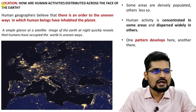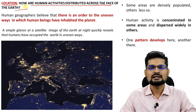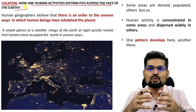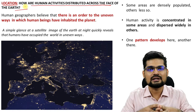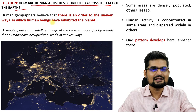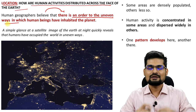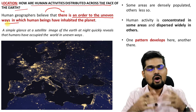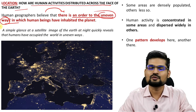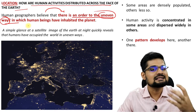The first point is location. How are human activities distributed across the face of the earth? How and where it is located, and why it is located there — these are the basic questions we ask in terms of human settlements. Human geographers believe that there is an order to the uneven ways. Even in disorderliness, there is an order that can be discussed and described. That is the core component of human geography in terms of locational analysis — in which human beings have inhabited the planet.